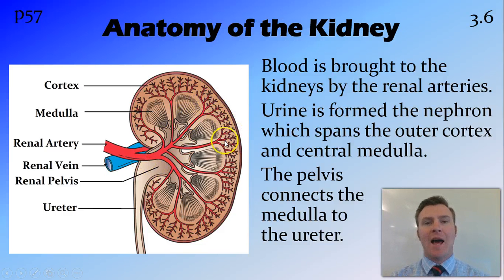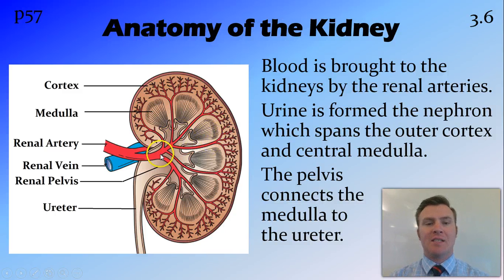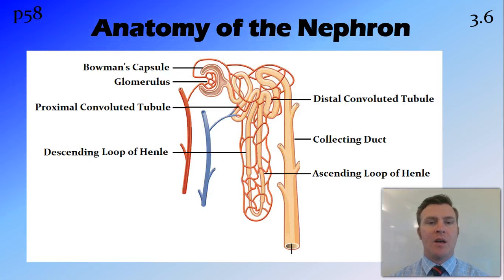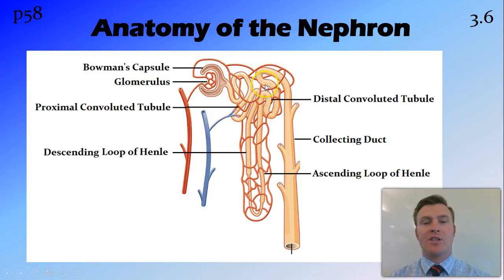The blood, which now has urea and other waste products taken out of it, gets sent back to the body through the renal vein. The functional unit of the kidney is called the nephron. This is what the nephron looks like, and as I said before, it stretches from the cortex at the top down into the salty medulla.